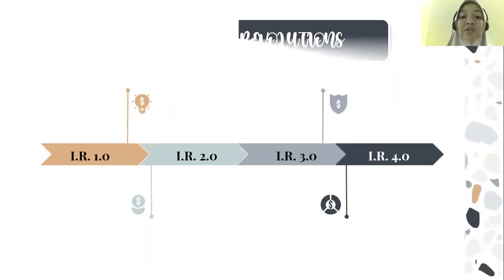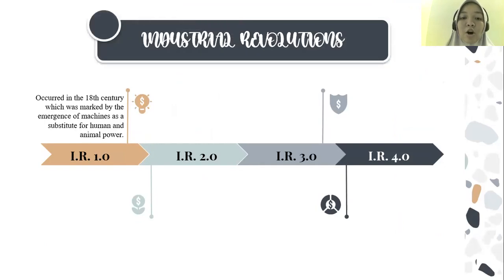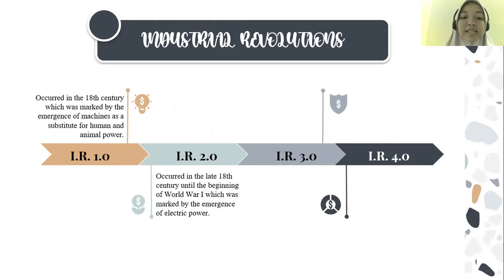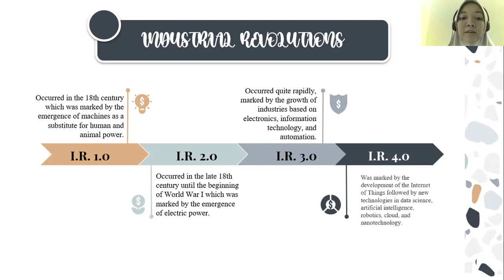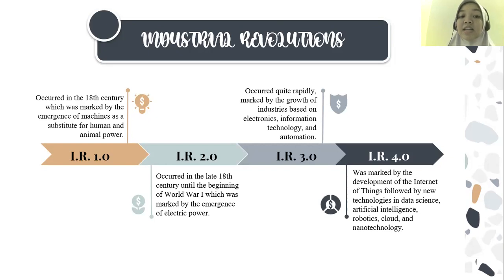The Industrial Revolution 1.0 occurred in the 18th century, marked by the emergence of machinery as a substitute for human and animal power. Second, the Industrial Revolution 2.0 occurred in the late 18th century until the beginning of World War One, marked by the emergence of electric power. Third, the Industrial Revolution 3.0 occurred quite rapidly, marked by the growth of industries based on electronics, information technology, and automation.